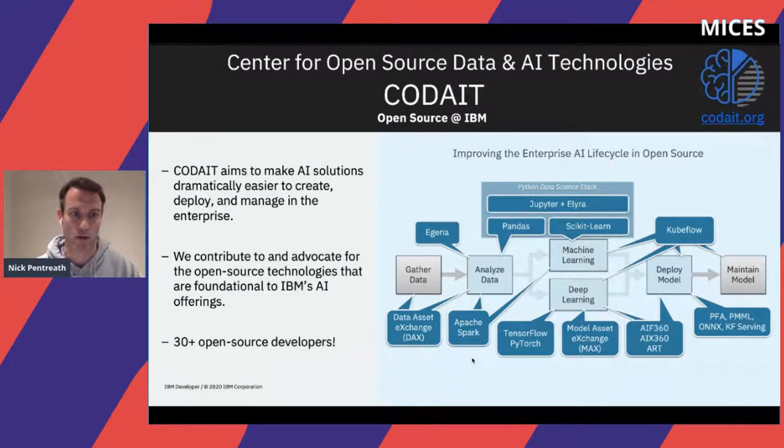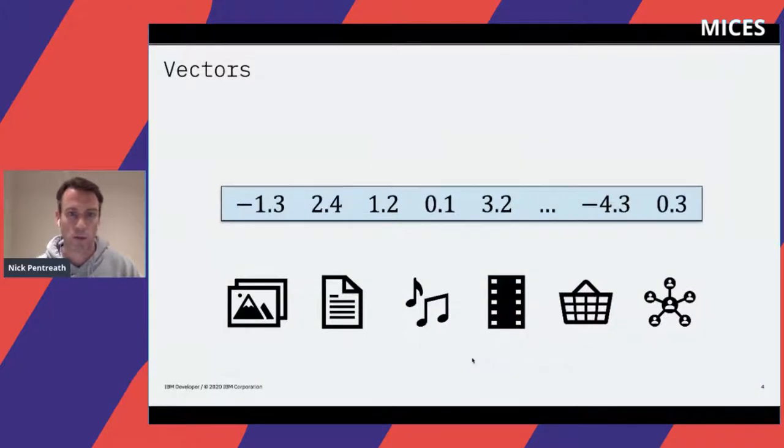We'll start by talking about what are vectors. A vector is essentially an ordered and indexed set of numbers, very much like an array. You have different dense and sparse vectors, but the dense vectors we'll be talking about today are very much an array.